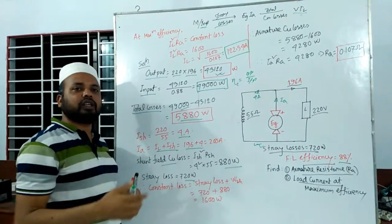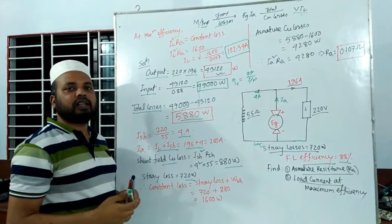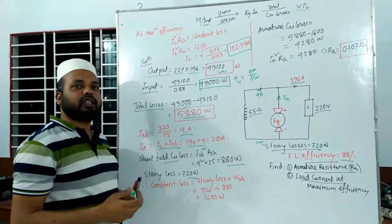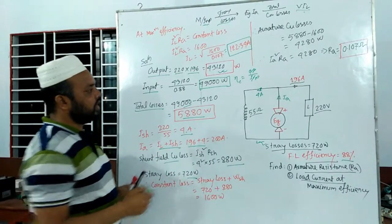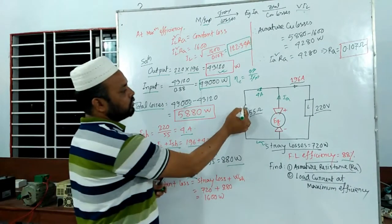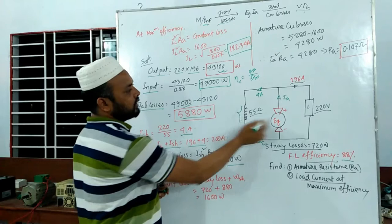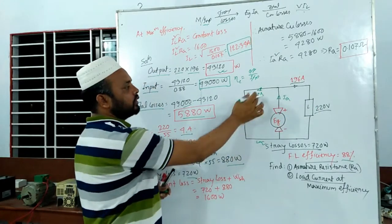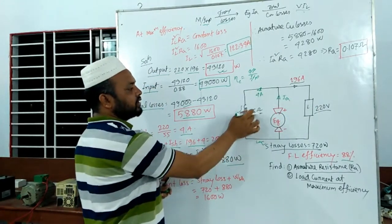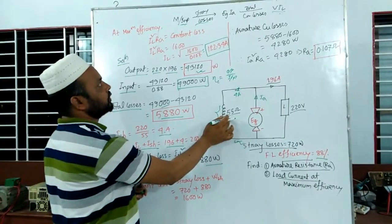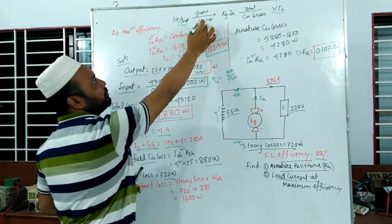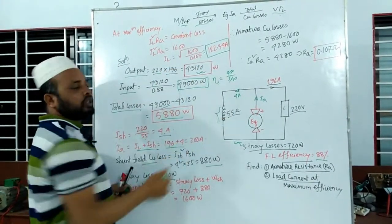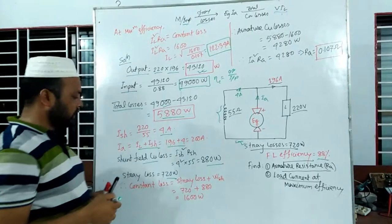We can see the variable loss versus the constant loss. This variable loss is very high because the terminal voltage is large, the current is large, and the resistance is large — so this loss is very high. These two types of loss make up the constant loss.